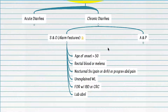For example, if a patient with chronic diarrhea has positive fecal occult blood testing, the next step is colonoscopy. Similarly, if a patient with chronic diarrhea has unexplained weight loss and nocturnal or progressive abdominal pain, the next step is colonoscopy. Put simply: if a patient has any of these alarm features, the next step in management is colonoscopy.